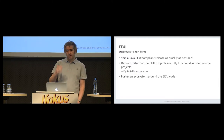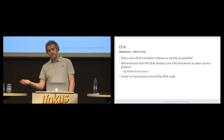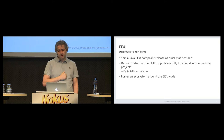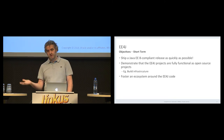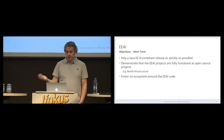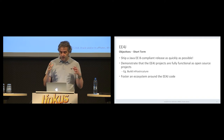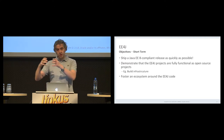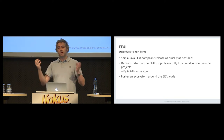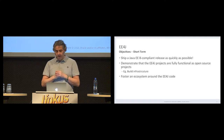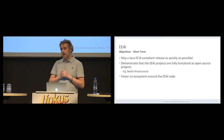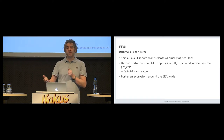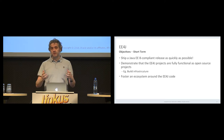But before we get there, we have things to do. Short-term, the EE4J project objectives — and when I say short-term, we're talking in a matter of weeks — first, EE4J wants to ship a Java EE compliant release as quickly as possible. EE4J will start to evolve from Java EE8, so we want to ship an EE4J implementation — let's call it EE4J 1.0 — and that implementation will have to be compatible with EE8.